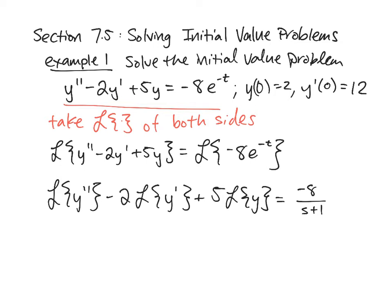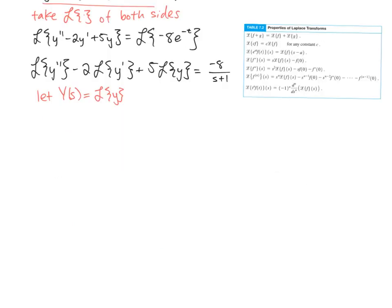Now we still have the Laplace transform of a bunch of derivatives. Recalling the properties of the Laplace transform, one property was that derivatives in the t universe turn into polynomials in the s universe. We want to turn the derivatives inside the braces into polynomials. Notation-wise, we're going to let capital Y(s) equal the Laplace transform of y, and then we'll bring in our table of properties to refer to.